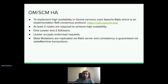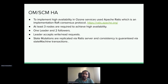To implement high availability for critical services like OzoneManager and storage container manager, we use Apache Ratis, which is an implementation of the Raft consensus protocol. Raft is used whenever we want a replicated state machine, replicate logs, or have a highly available system. We need at least three nodes — one will be chosen as leader and the other two act as followers. Clients connect to the leader and submit read or write requests. State mutations are replicated by the Ratis server and consistency is guaranteed by applying the Ratis log in the same order across all machines.